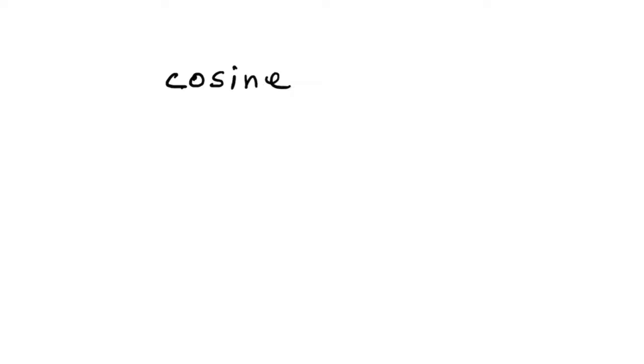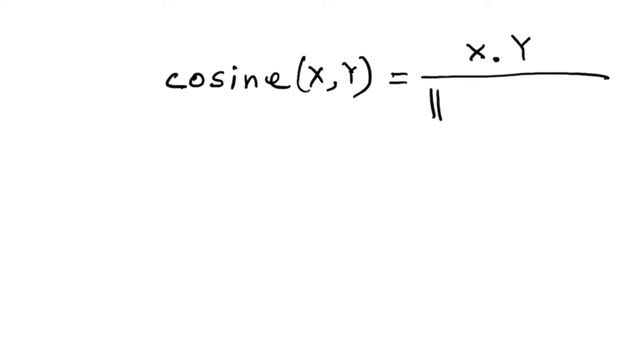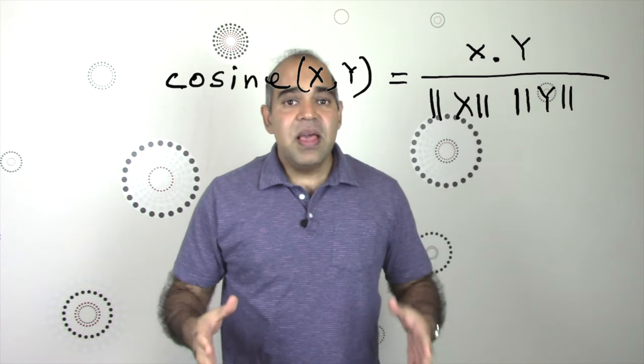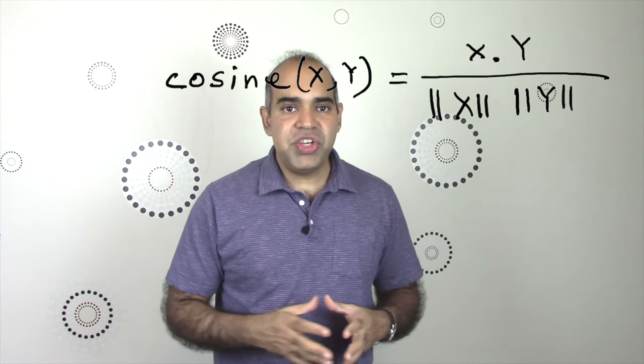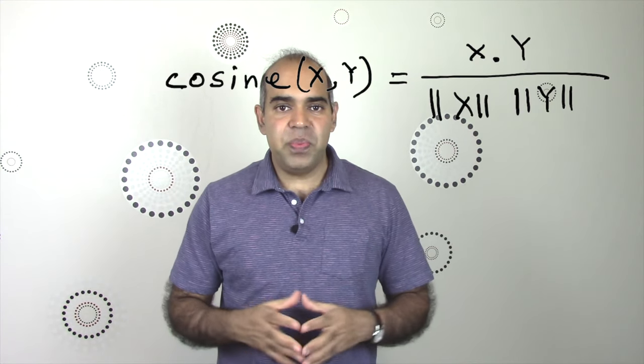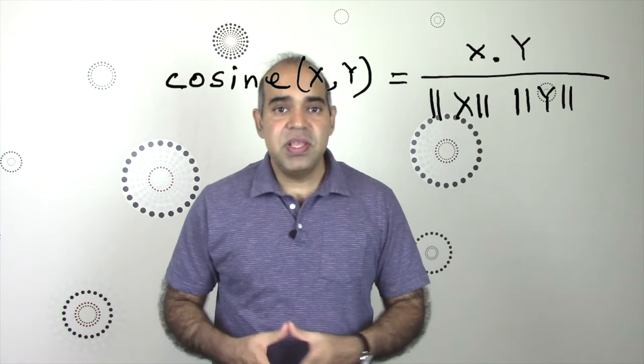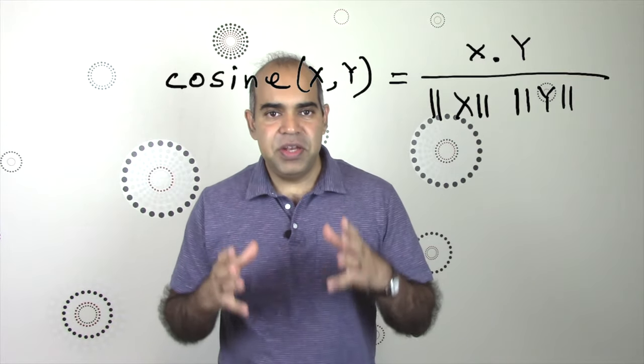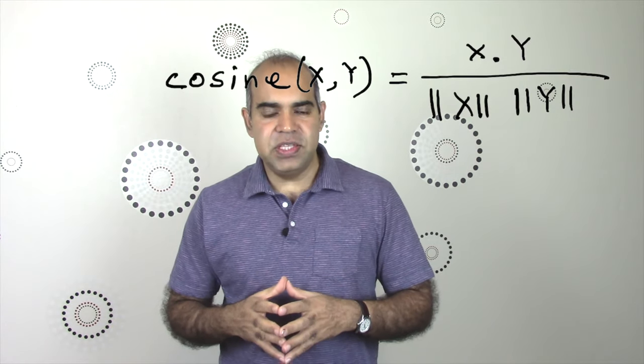We are going to discuss another similarity measure today named cosine similarity. Cosine similarity between two vectors x and y is computed using the following formula: cosine similarity is the ratio of the dot product of the two vectors and the multiplication of the norms of these vectors.